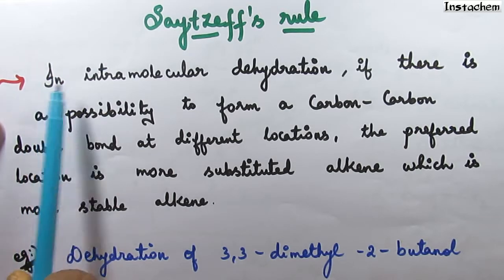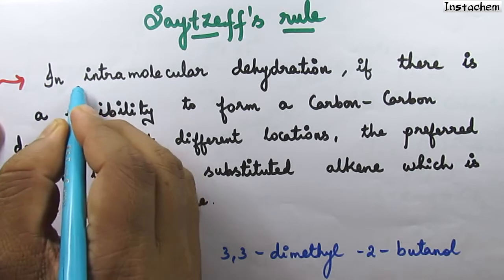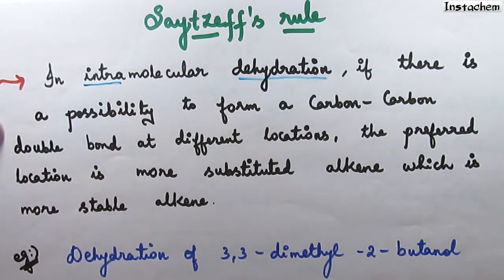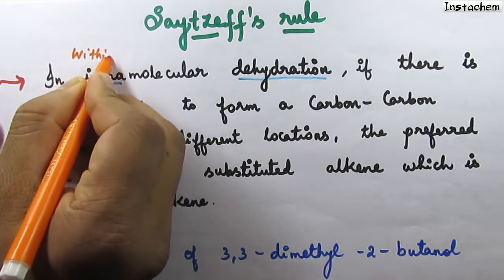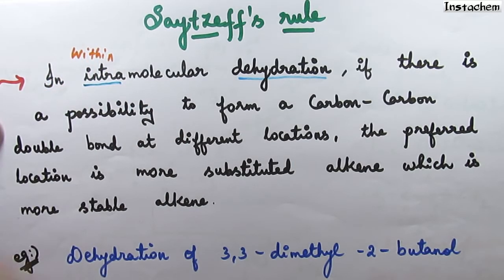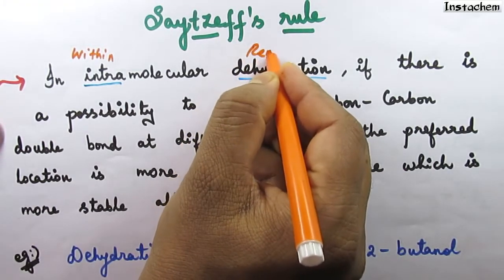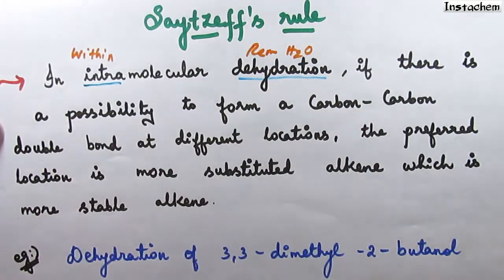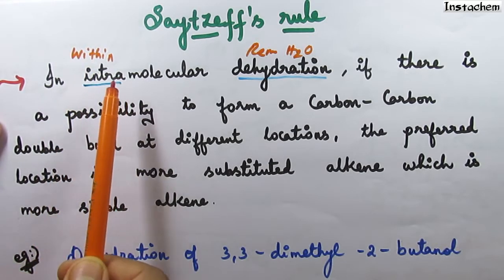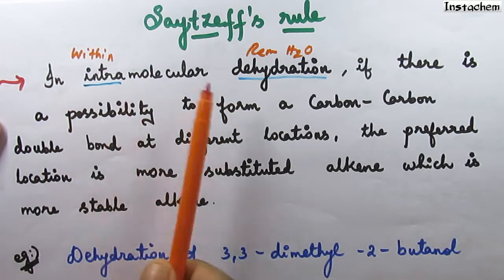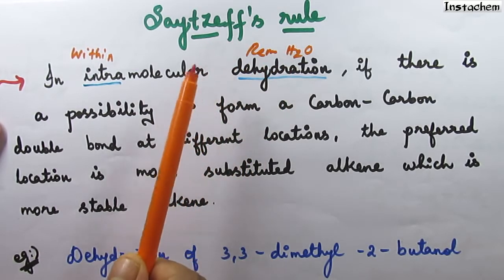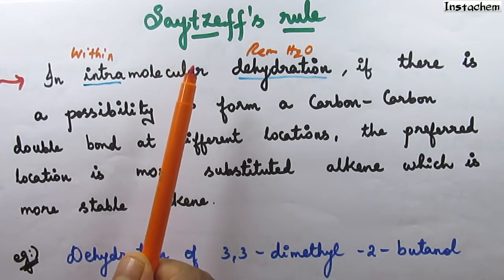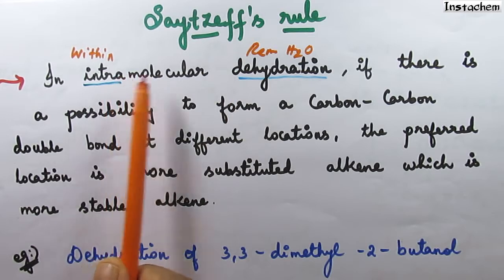Go through this first line: intramolecular dehydration. What is meant by 'intra' as well as 'dehydration'? The term 'intra' stands for within — within a single compound. The term 'dehydration' stands for removal of water, just removing H2O from a single organic compound. That is intramolecular dehydration. Another term is intermolecular dehydration — 'inter' means between two molecules, between two organic compounds. So intramolecular dehydration takes place within a single organic compound, and in that case we will get double bond compounds. The first condition: Saytzeff's rule is applicable for this intramolecular dehydration.